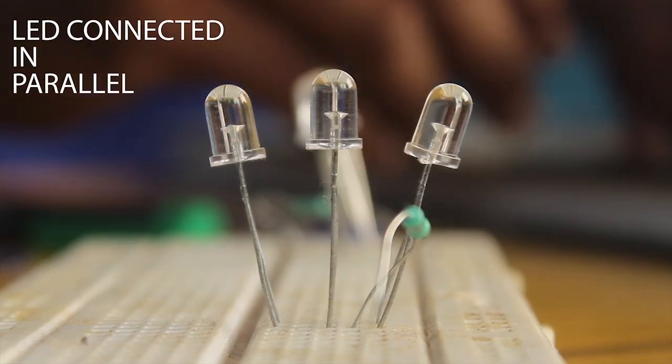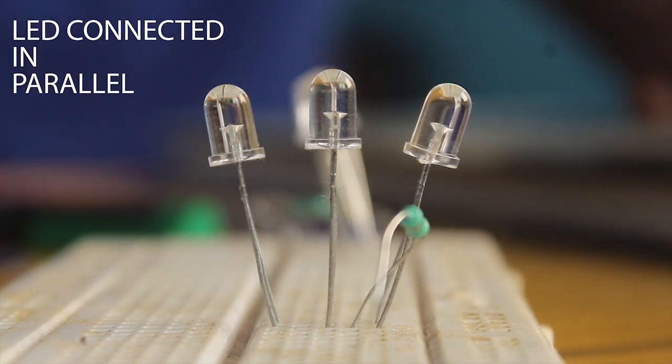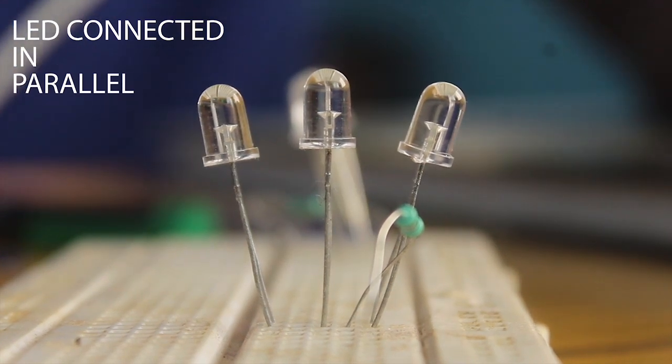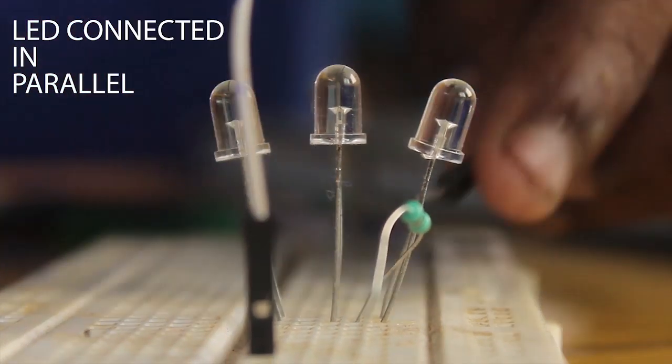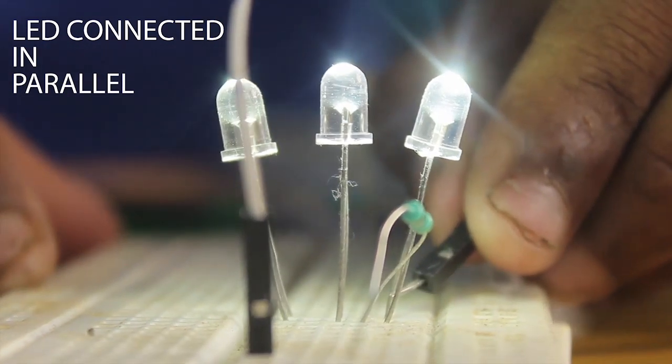Now we will see the working of the parallel circuit. Here the 3 LEDs are connected in parallel and I am going to give a supply of 12V to it. The LEDs glow.